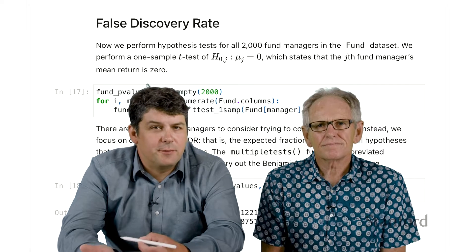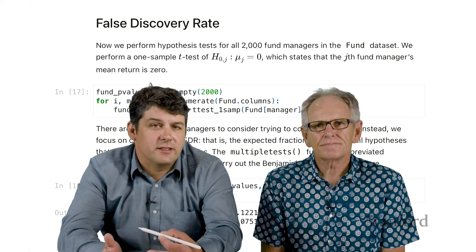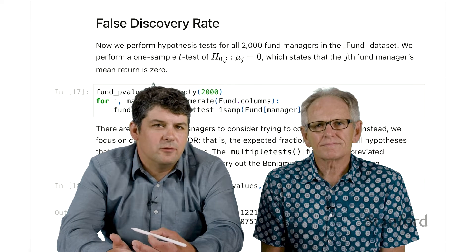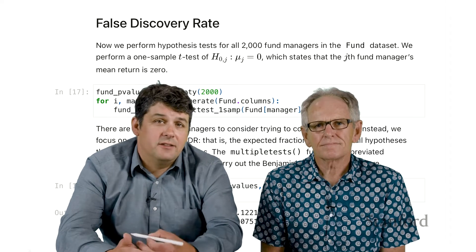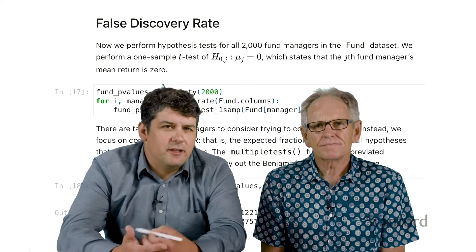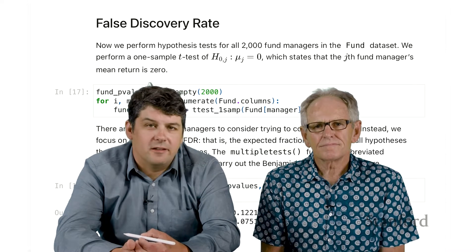The big difference between the false discovery rate and the family-wise error rate is the false discovery rate is really not as strict. The family-wise error rate tries to control the chance of making any mistakes. The false discovery rate, roughly speaking, tries to control the proportion of mistakes among the rejected that we make.